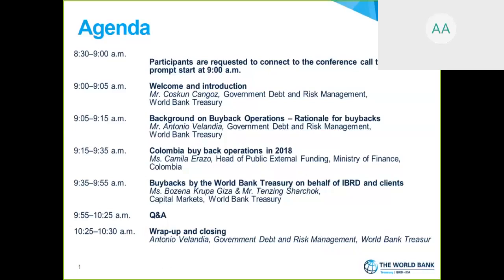This is the case of Colombia — Camila will tell us how they used this operation in October to buy back one billion dollars of dollar bonds maturing in 2019 and exchange them for one billion dollars of 2029 maturity bonds. In the local markets we can also see reverse auctions, normally on a multiple-price basis, but that is not covered today.